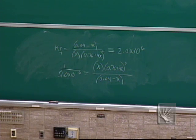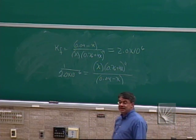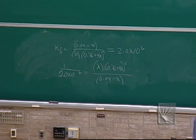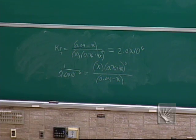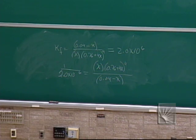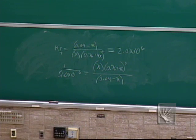In order to do the math trick and ignore x, I need a small value for K. If I have a large K like 2 × 10^6, I can't do it. So I reverse the reaction, which mathematically means taking the reciprocal. Chemically I'm reversing the reaction; mathematically I'm taking the reciprocal — they do the same thing. Now my K is very small and I'm back to where I want to be.